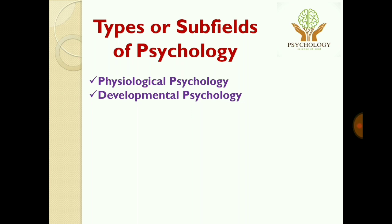The next type is personality psychology. This branch helps to explain both consistency and change in a person's behavior over time, from birth till the end of life, through the influence of parents, siblings, playmates, school, society, and culture. It also studies the individual traits that differentiate the behavior of one person from another.